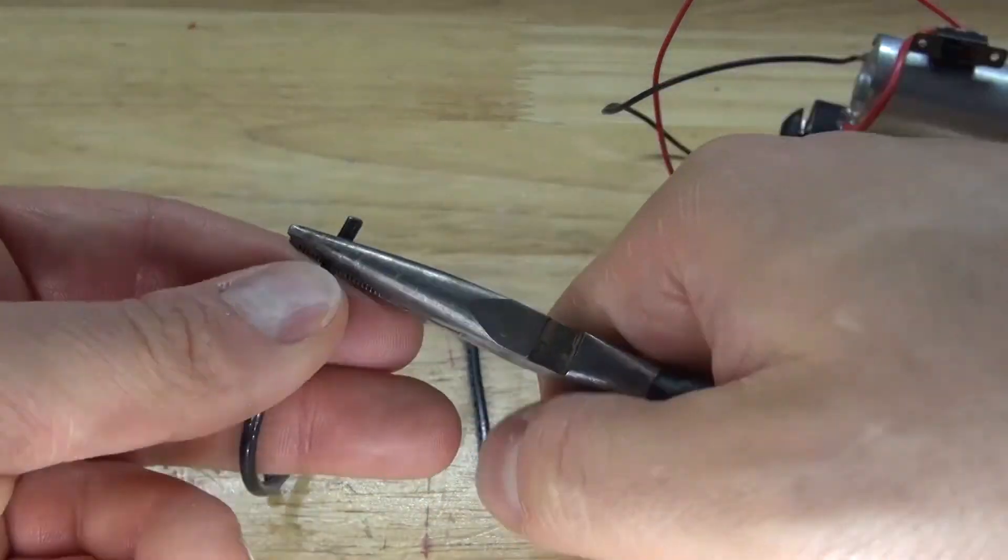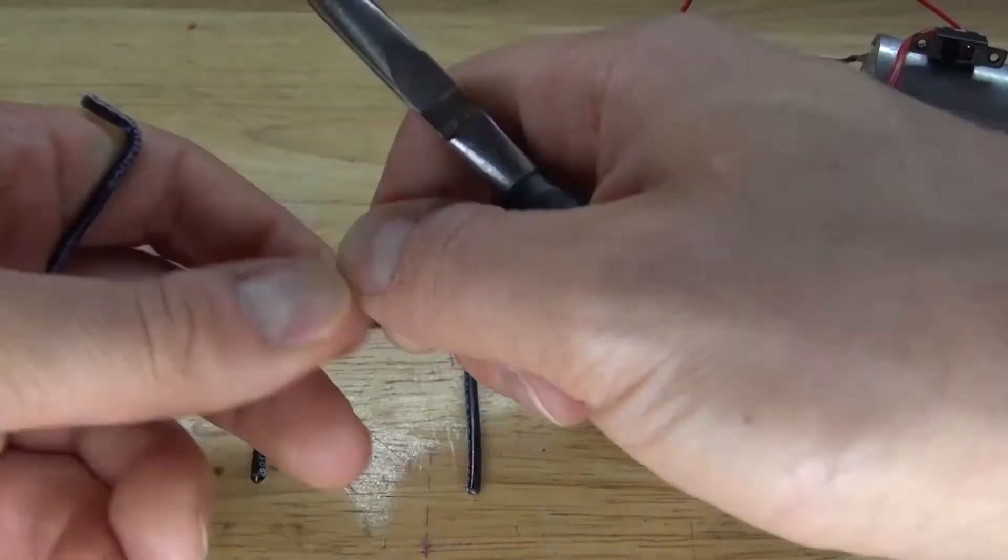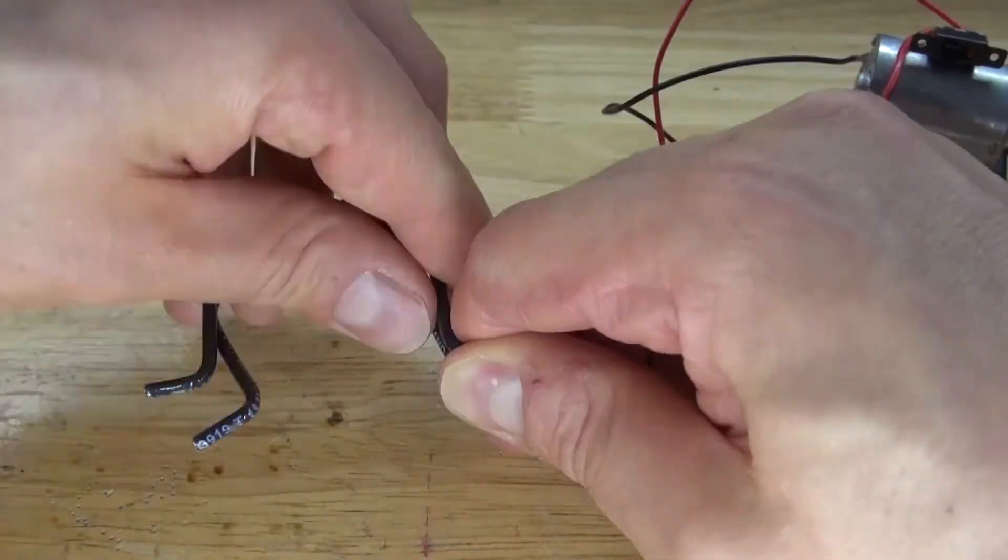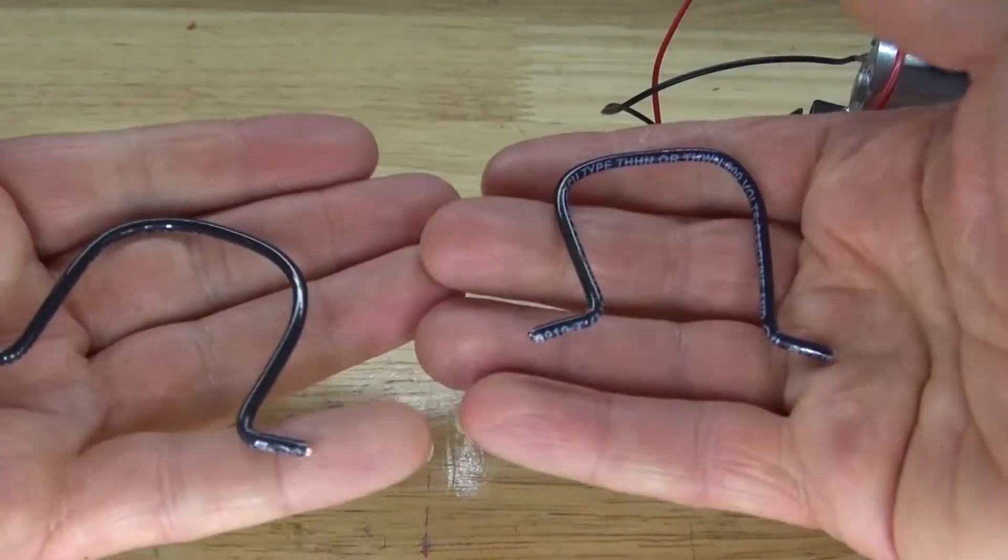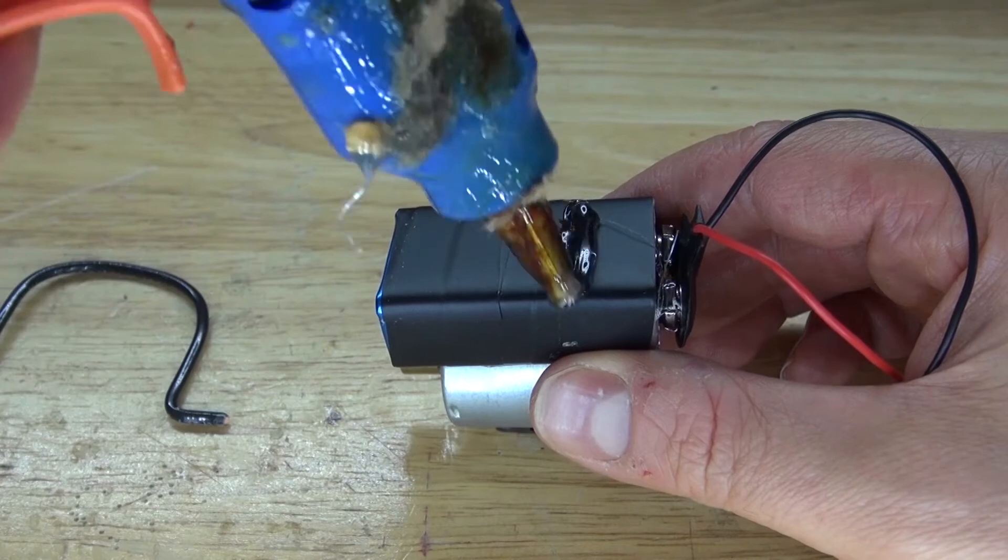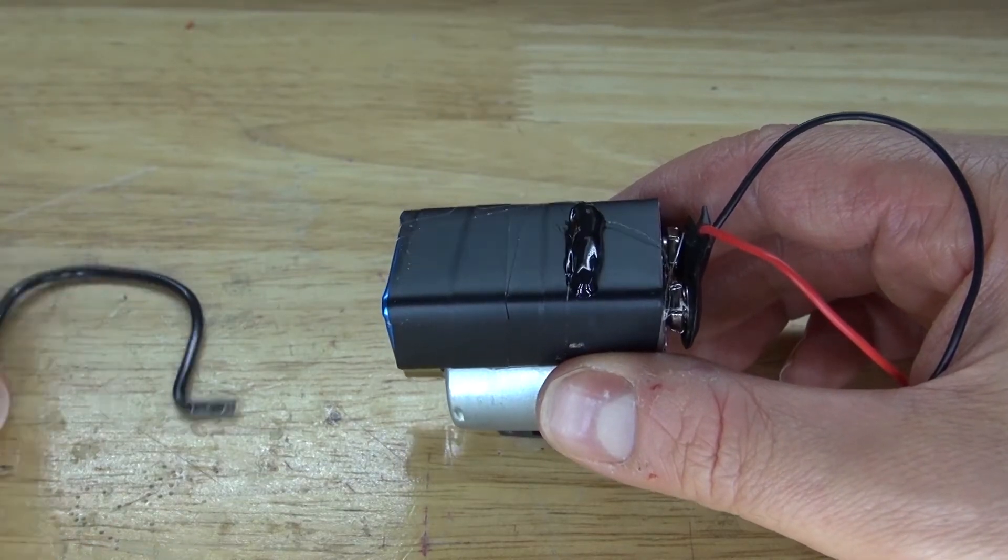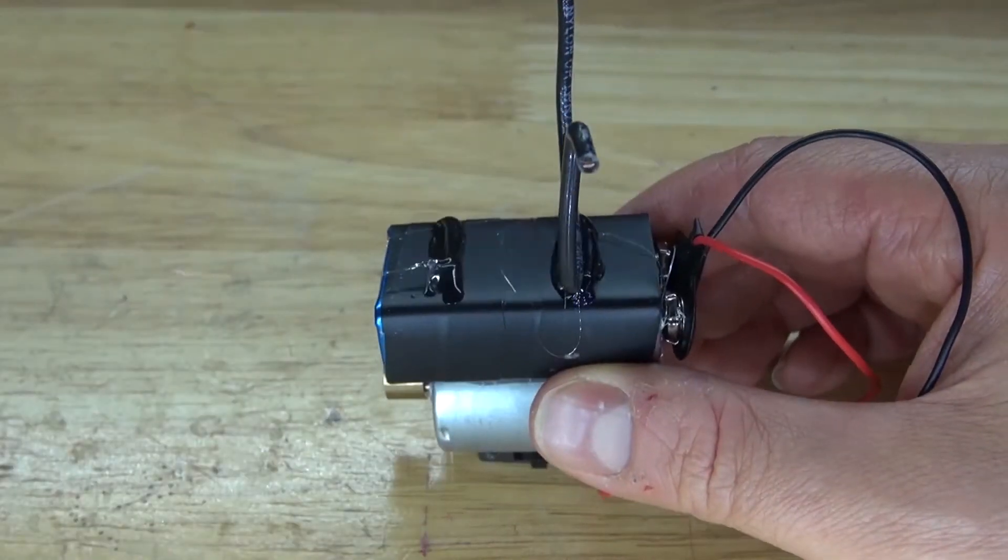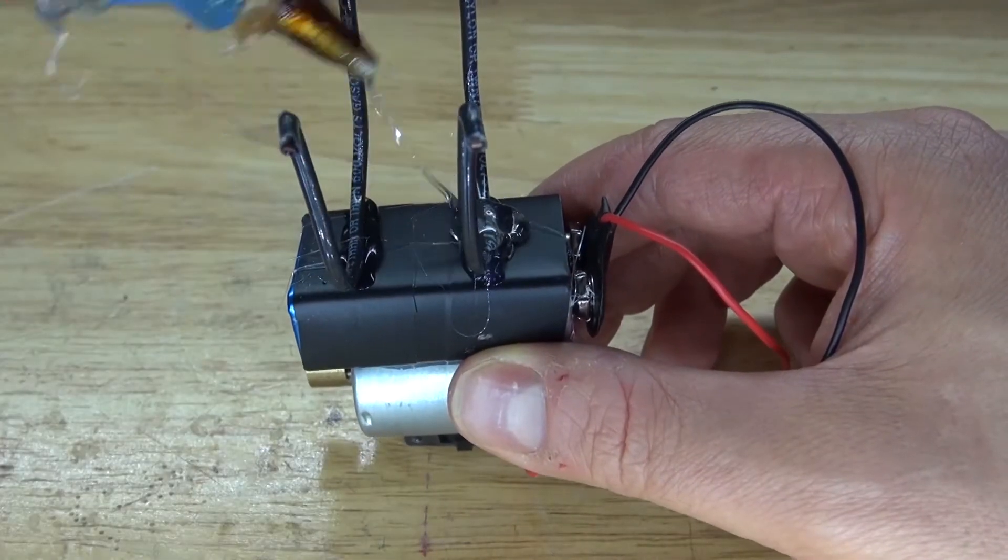And then take some pliers and bend little feet on the wires. And there, two identical wires, which is basically four legs. Next, take some hot glue and glue it to the 9-volt battery. Take these wires and glue them into place. Add some hot glue to glue them into place better.